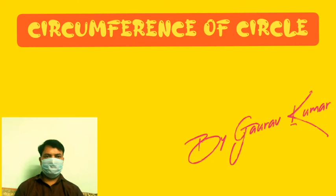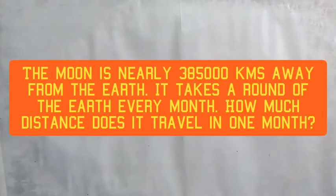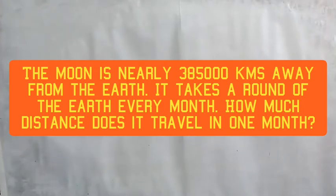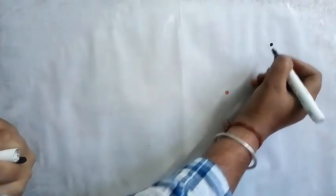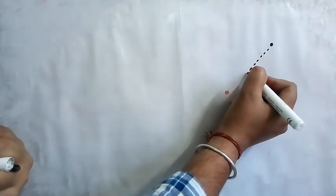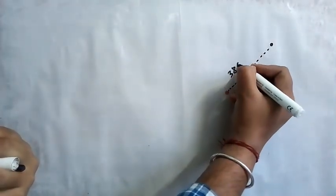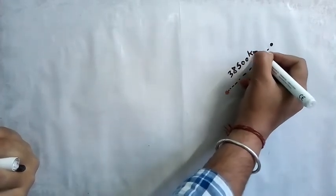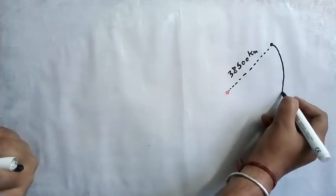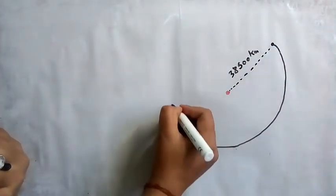Namaste everyone. Let us see a few questions on circumference of a circle. The first question is: the moon is nearly 385,000 kilometers away from the earth. It takes a round of the earth every month. A red dot on the board represents the earth and a black dot represents the moon. The distance between earth and moon is 385,000 kilometers.